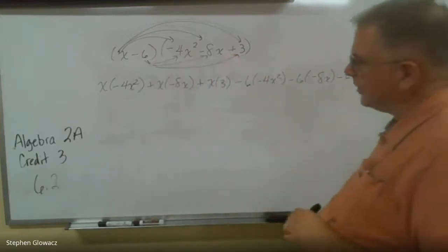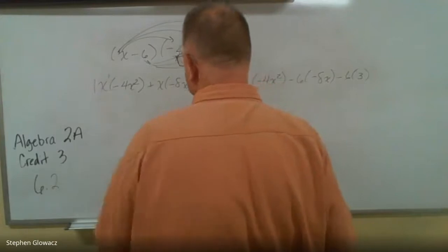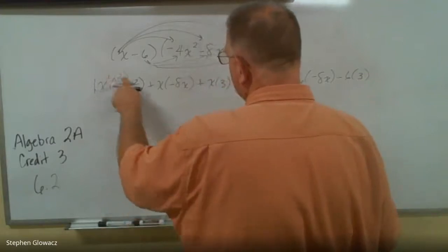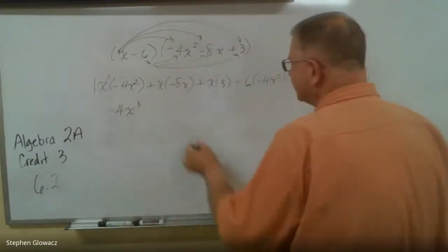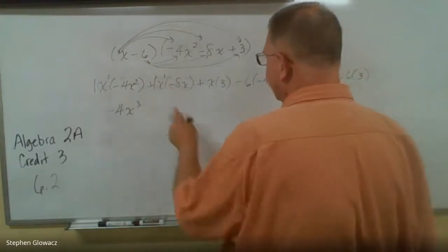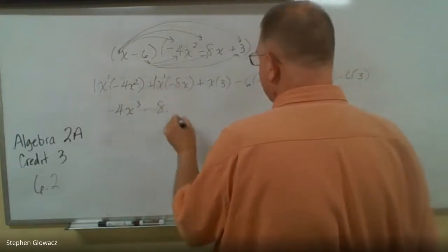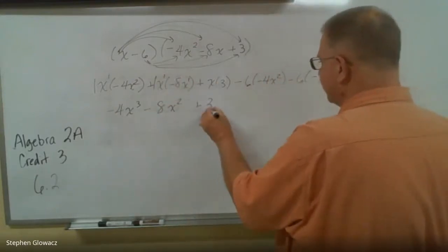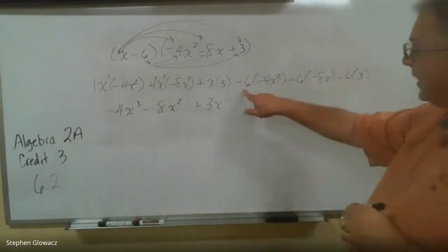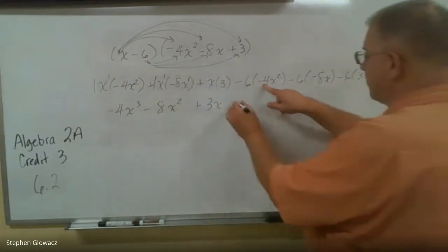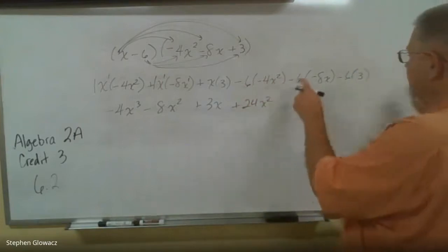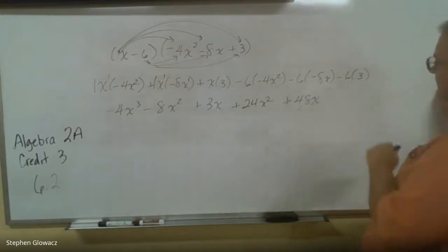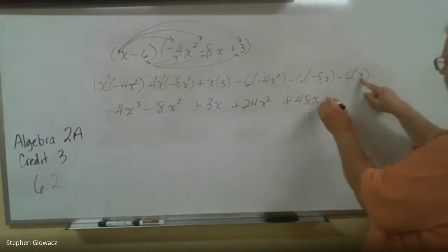Let's multiply these out. Putting in the coefficients and exponents: 1 times negative 4 is negative 4, and 1 plus 2 is 3, so negative 4x³. Then 1 times negative 8 is negative 8, and 1 plus 1 is 2, so negative 8x². x times 3 is just 3x. Then negative 6 times negative 4 is positive 24x². Negative 6 times negative 8 — negative times negative is positive — gives 48x. And negative 6 times 3 is negative 18.